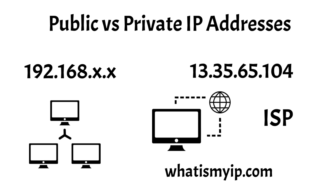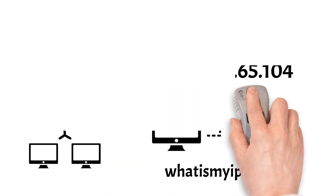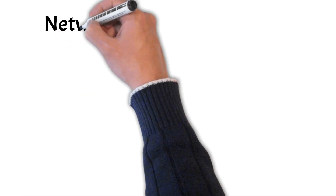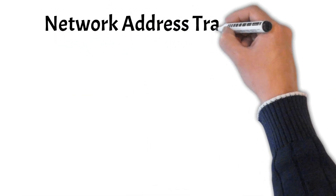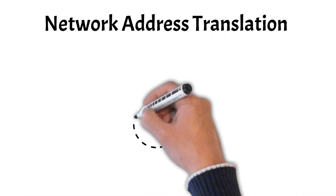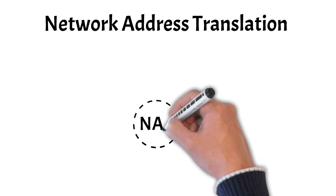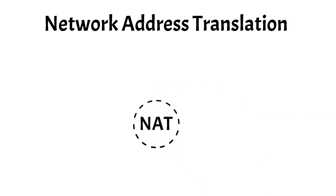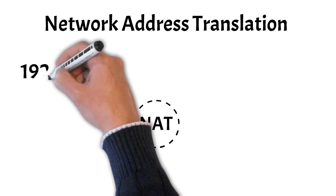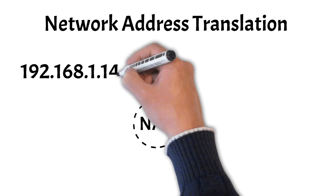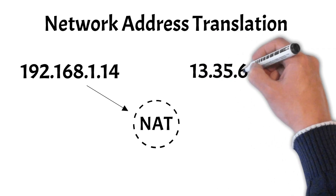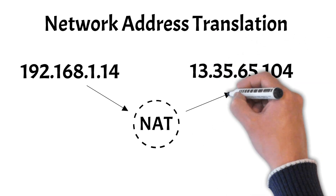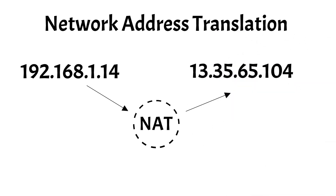Now, you might be wondering how you can have two IP addresses for one device. The explanation lies in a method known as Network Address Translation, also commonly called NAT. It serves to translate your private IP address into a public one, which is used to access public websites and services on the internet.